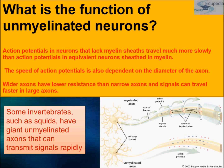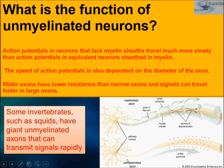In a myelinated axon, the action potential jumps from node to node — this is saltatory conduction — showing the speed of depolarization. In an unmyelinated axon, the action potential moves continuously along the axon much more slowly. Wider axons have low resistance and signals travel faster, and the speed of the action potential is dependent on the diameter of the axon.